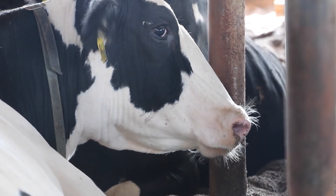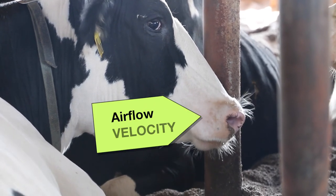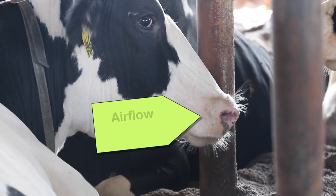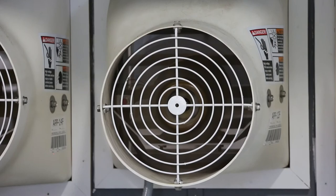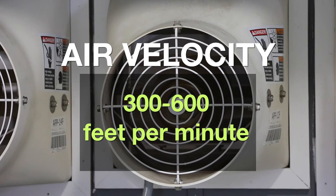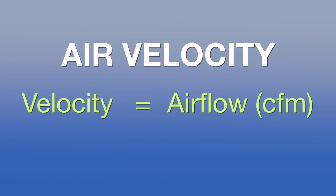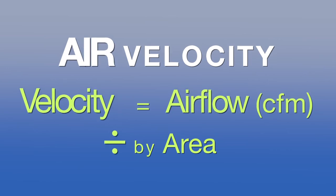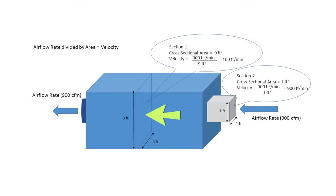These systems can also be designed to increase the velocity of air moving past the animals to help remove body heat. Air velocities from 300 to 600 feet per minute are used to enhance evaporative cooling. Air velocity can be calculated with this simple equation: velocity equals air flow, or CFM (cubic feet per minute), divided by the area. The area is the cross-sectional area of the barn in the path of the airflow.